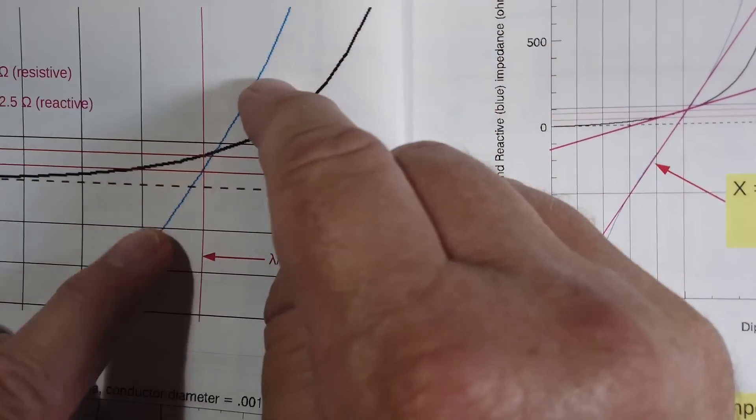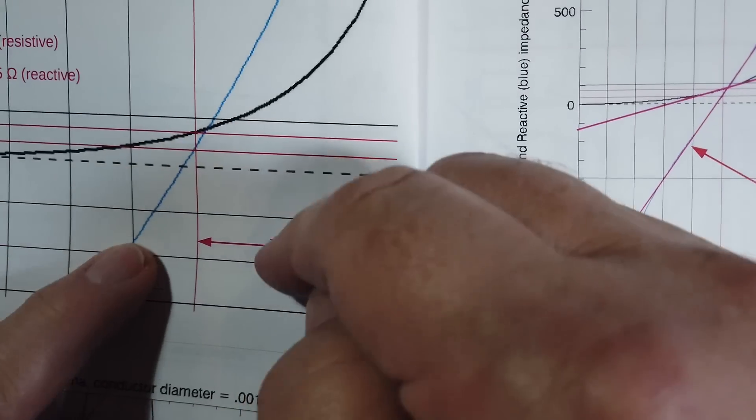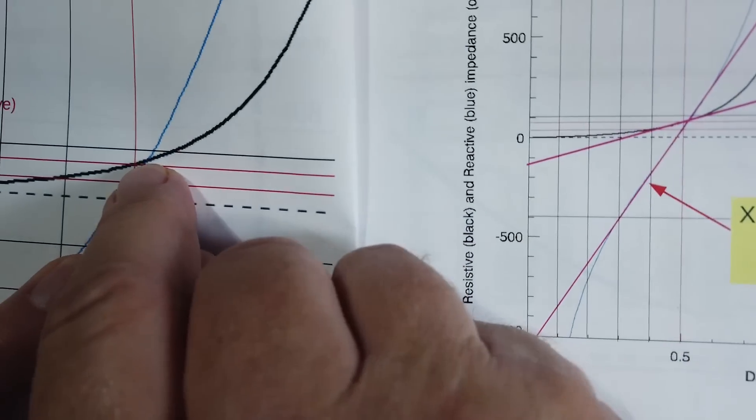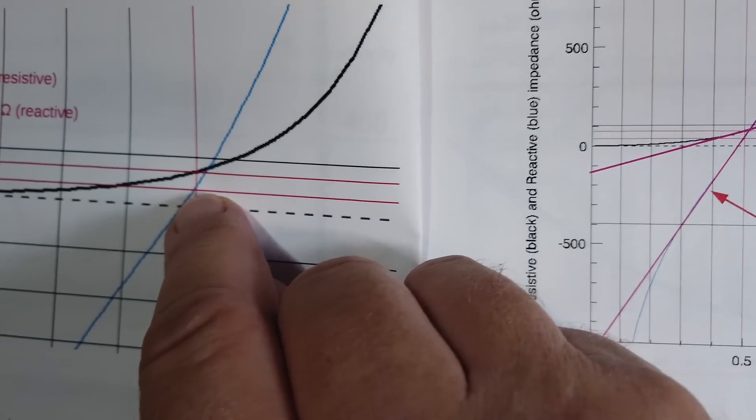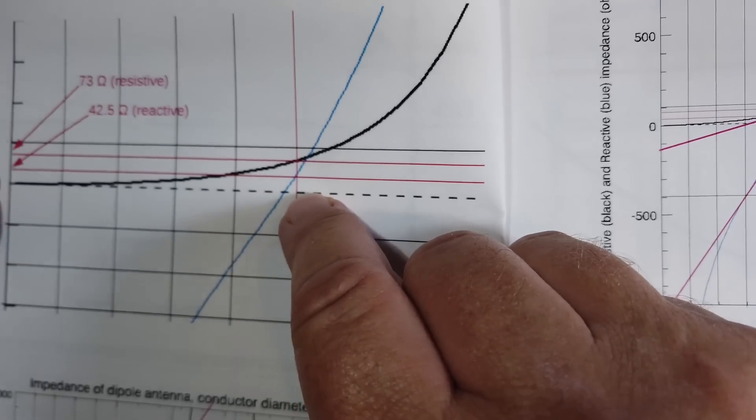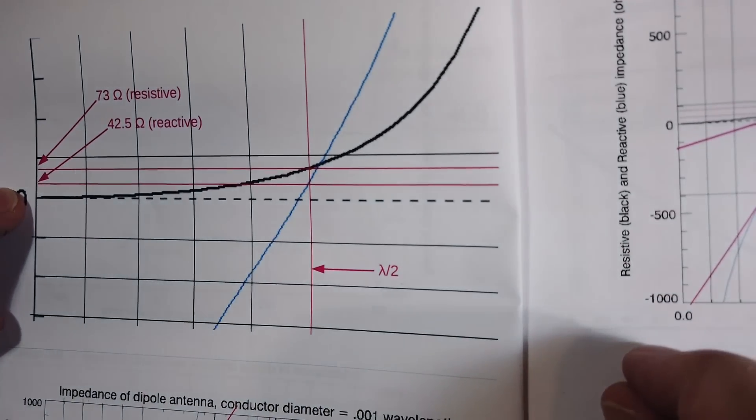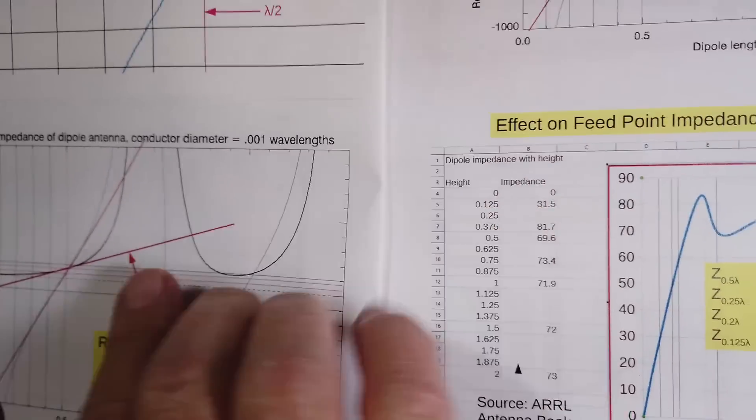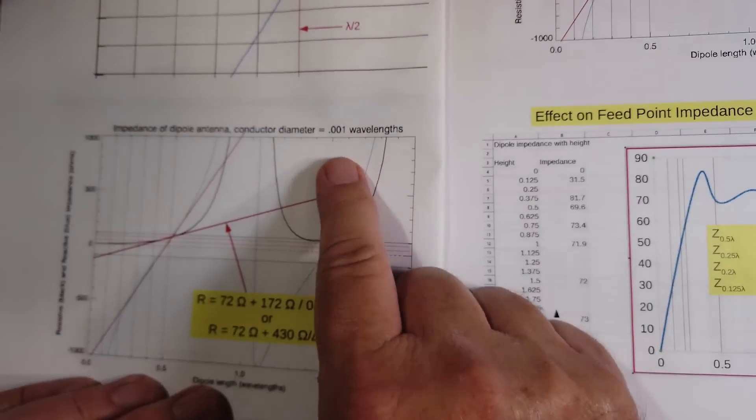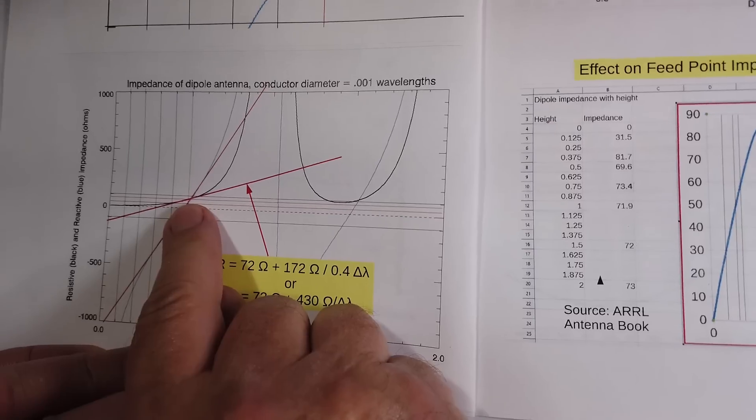The resistance at half wavelength is here at actually 73 ohms. And the reactance is here at this point, about 42 ohms. And we've looked at the impedance of a dipole antenna. And this is what you get right there.